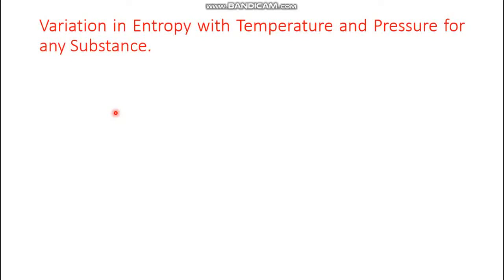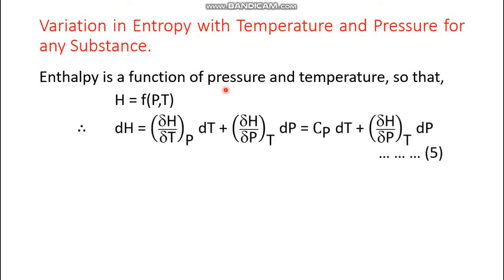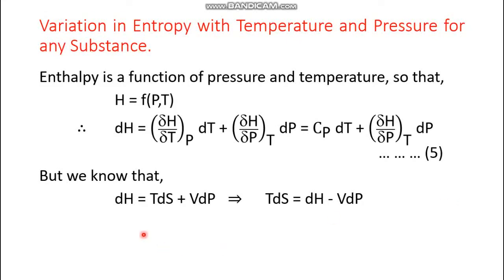Now we discuss variation of entropy with respect to temperature and pressure. We take enthalpy as a function of pressure and temperature: H = f(P, T). Its total differential is dH = (∂H/∂T)_P dT + (∂H/∂P)_T dP. Since (∂H/∂T)_P equals Cp, this becomes dH = Cp dT + (∂H/∂P)_T dP. This is equation number five.